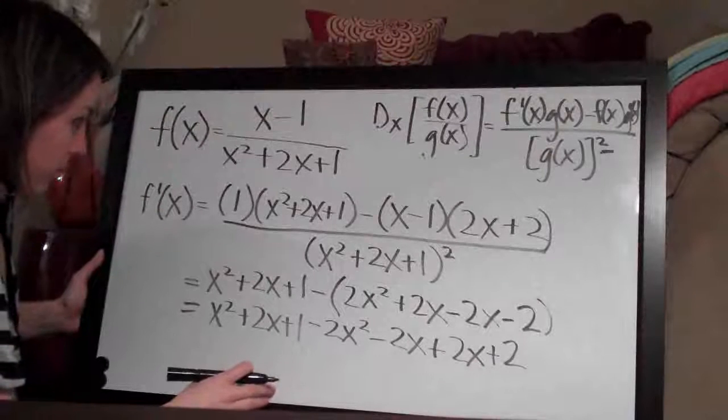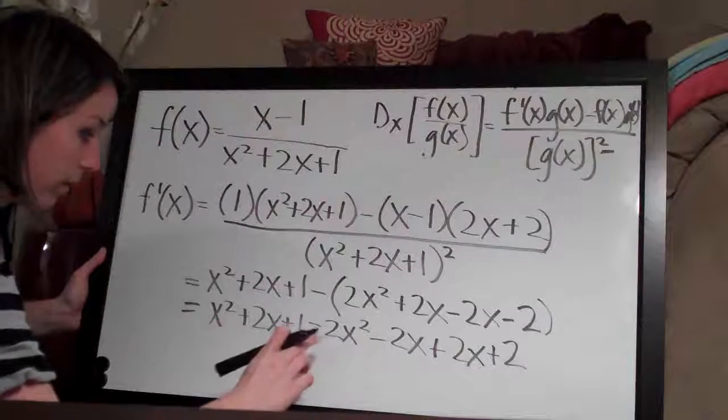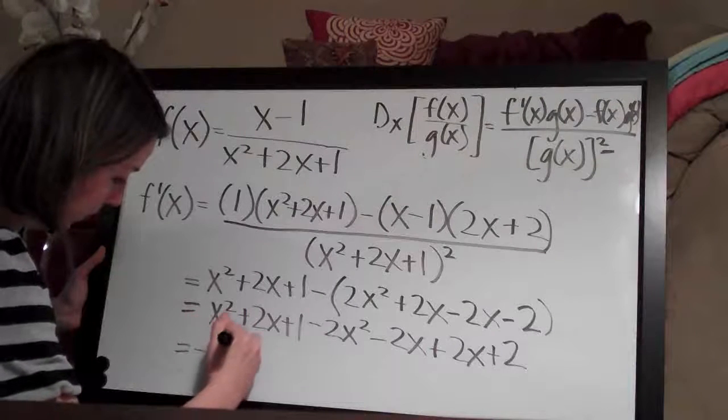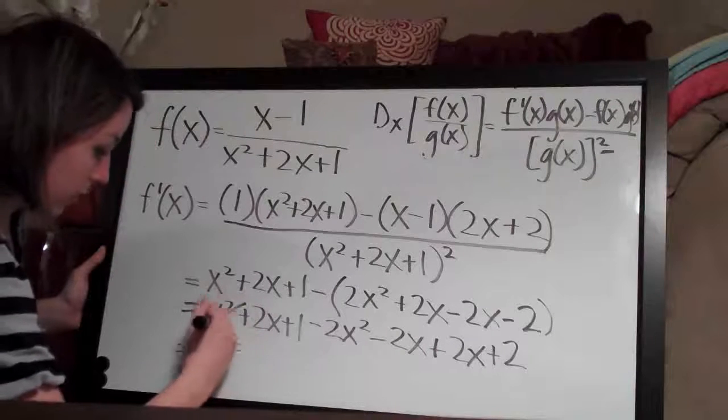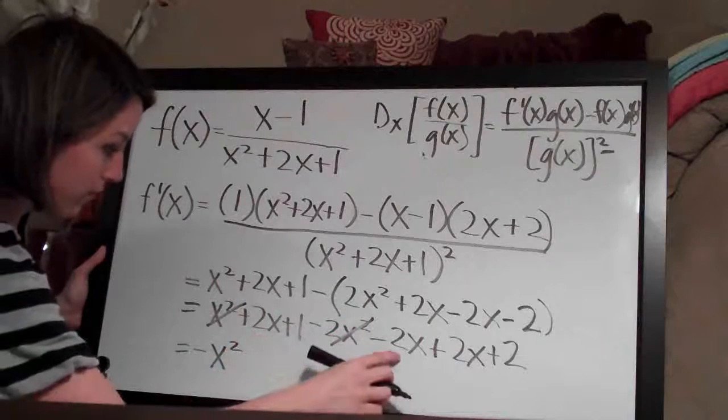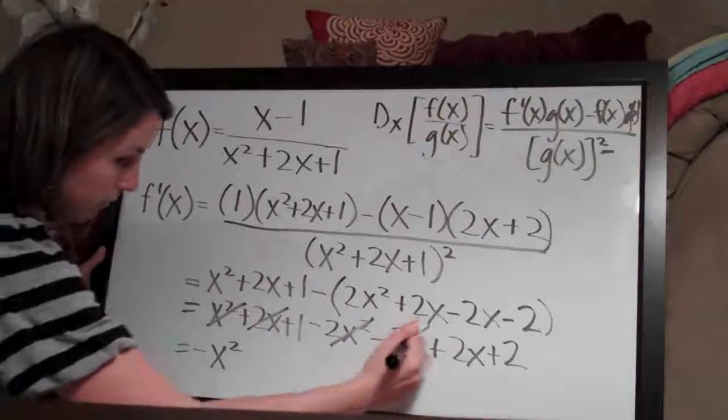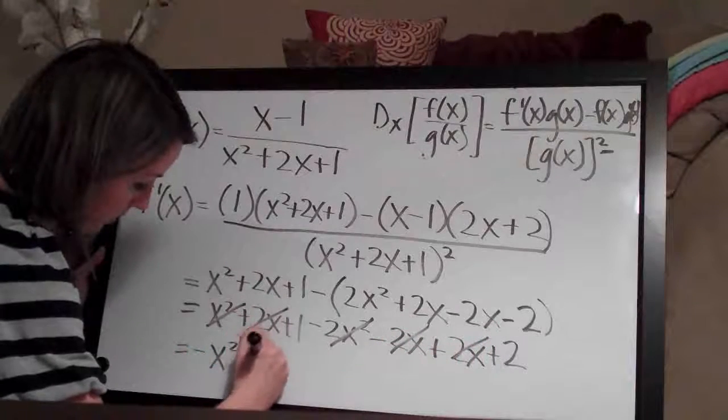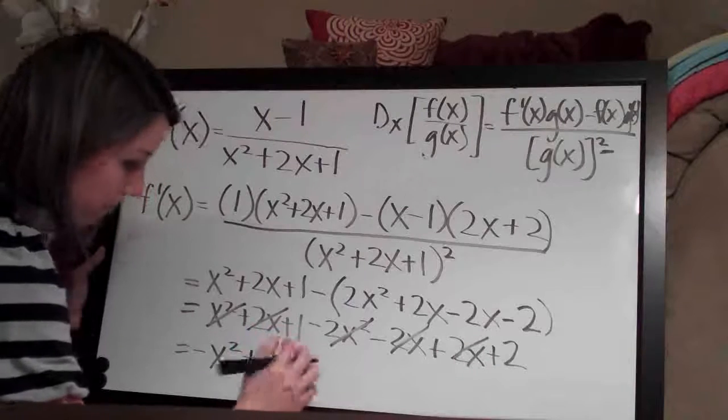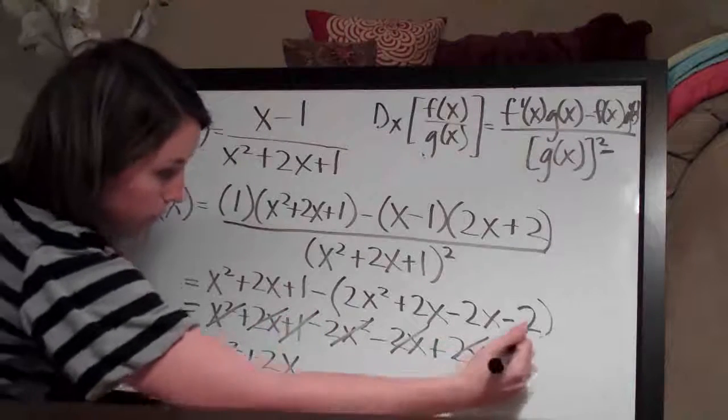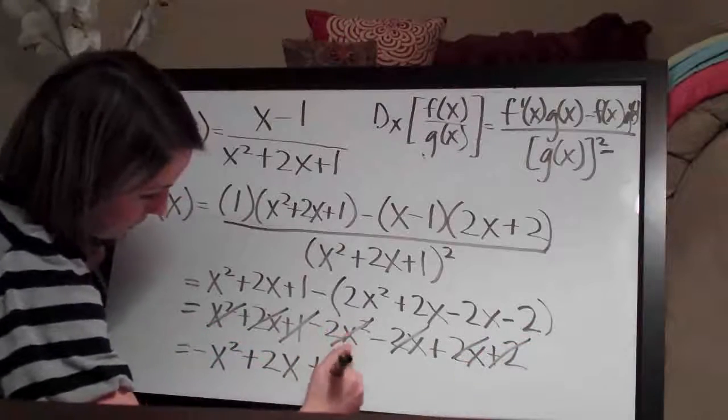We should be able to simplify that. x² minus 2x² is -x², and then 2x-2x is 0, plus 2x is 2x, so +2x, and then 1+2 is 3.